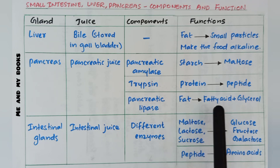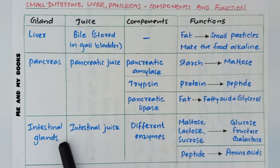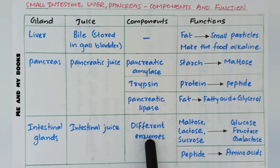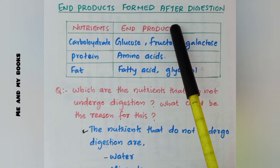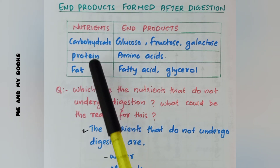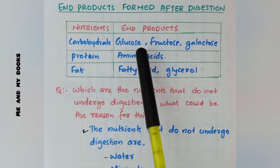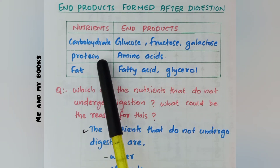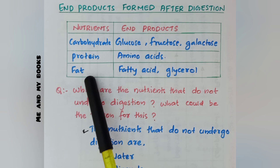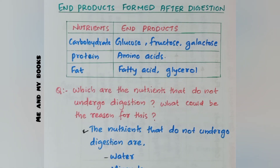Pancreatic amylase converts starch into maltose. Trypsin converts protein into peptides. Pancreatic lipase converts fat into fatty acids and glycerol. Intestinal glands in the small intestine produce intestinal juice with many enzymes that convert maltose, lactose, and sucrose into glucose, fructose, and galactose, and convert peptides into amino acids. End products: carbohydrates → glucose, fructose, galactose; protein → amino acids; fat → fatty acids and glycerol.